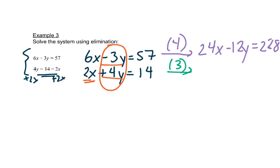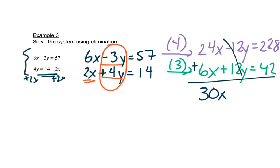So the bottom equation will multiply everything by 3. 3 times 2x is 6x. 3 times 4y is 12y. And 14 times 3 is 42. So we're going to add these equations together. So 24x plus 6x is 30x. This cancels out, which is what we wanted. And then 228 plus 42 is 270.